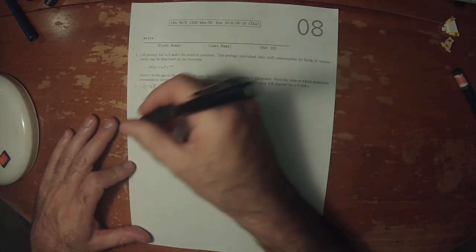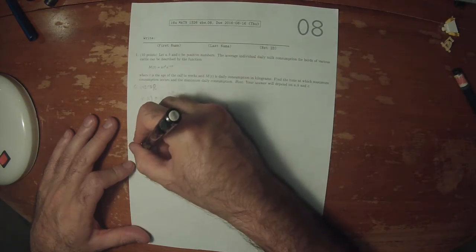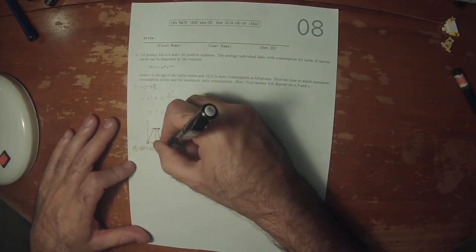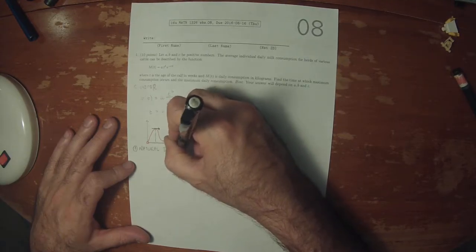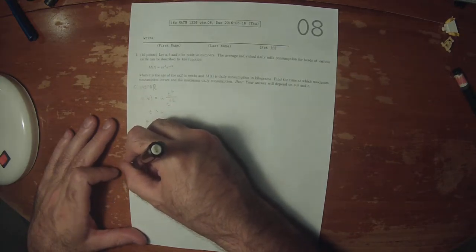So to make a slope chart, the first step is to consider the natural domain. It is positive Ts. The second step, we need to find the critical numbers.